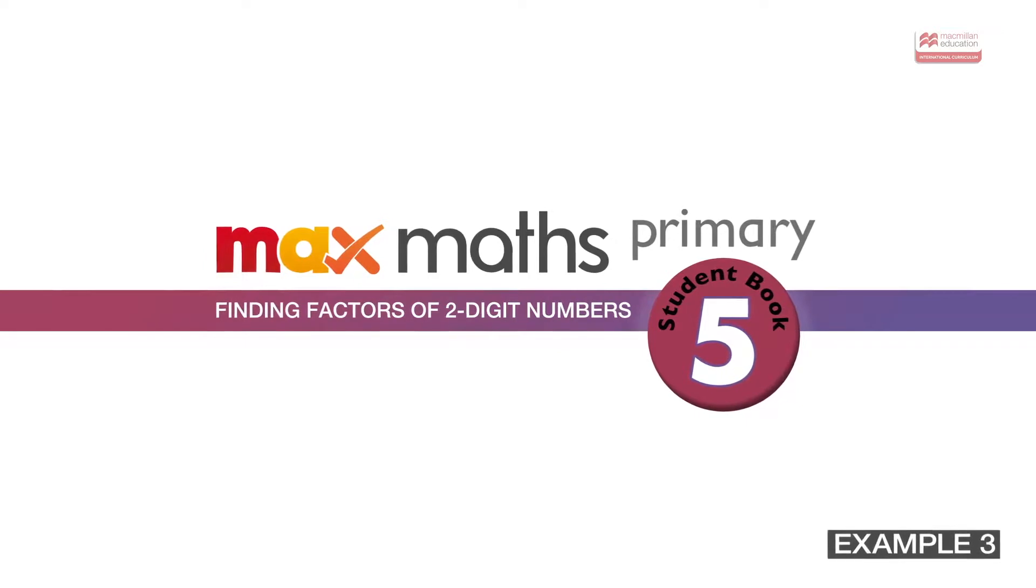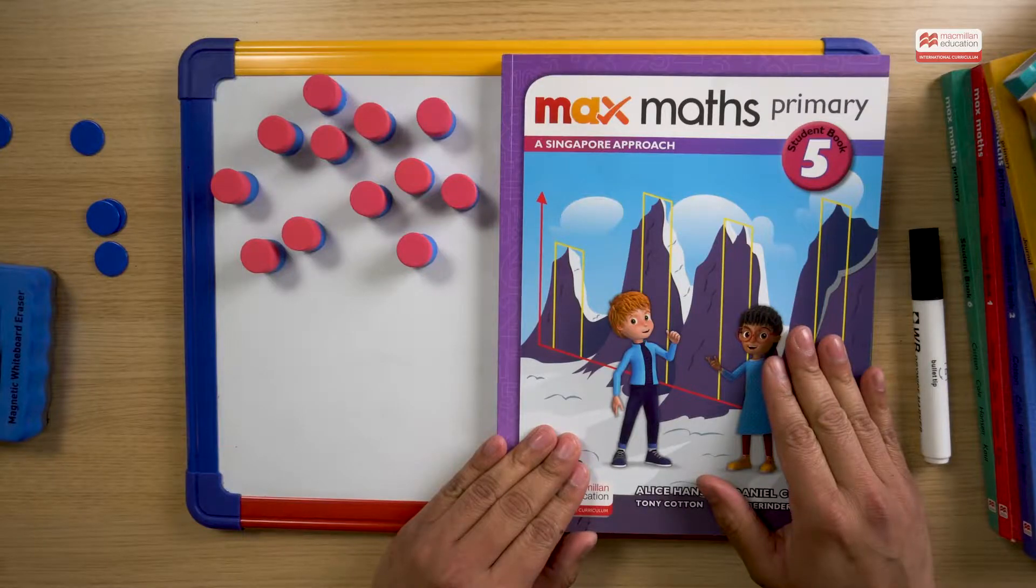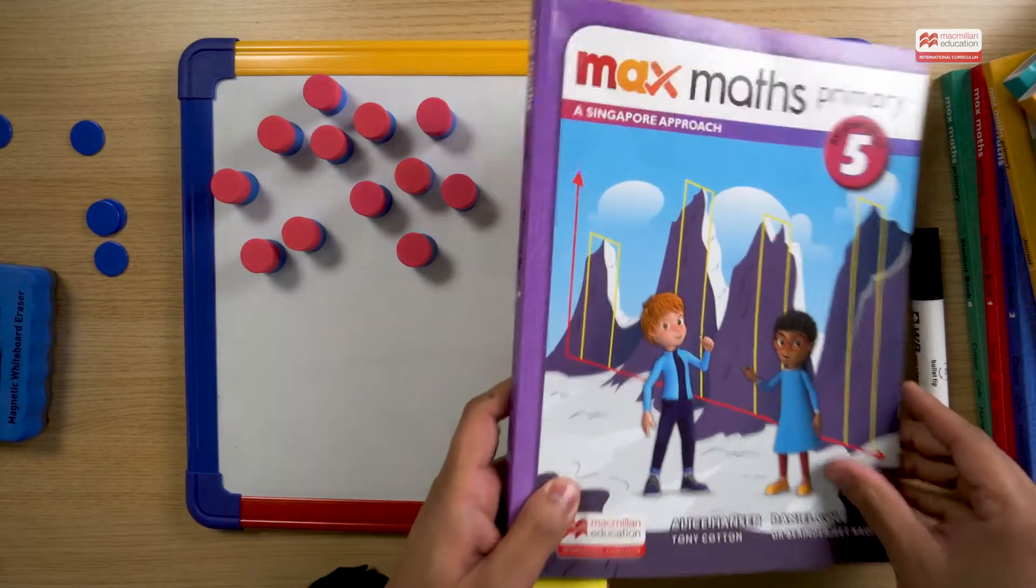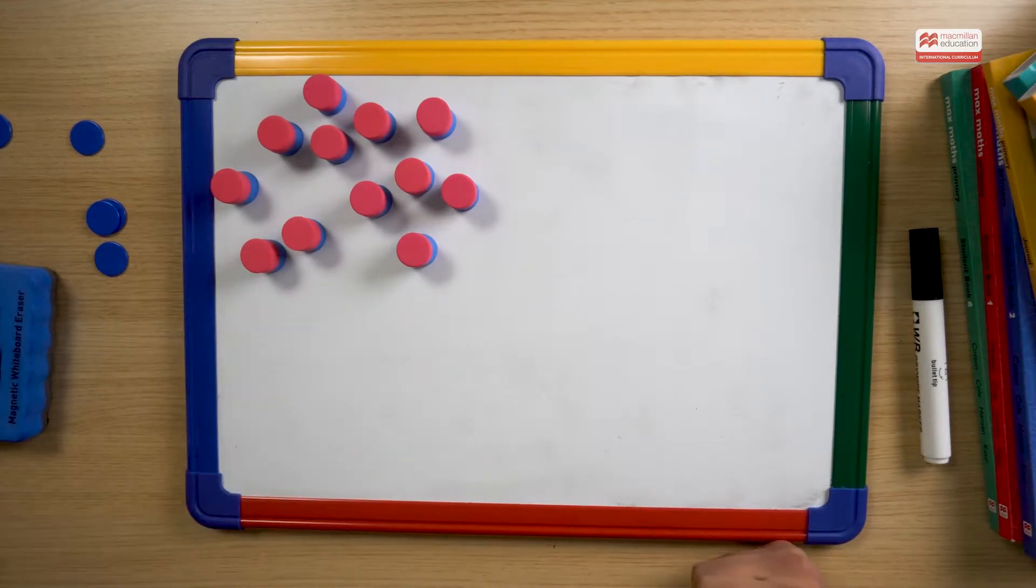Now we're going to look at a lesson from our MaxMaths Primary Student Book 5 on factors. Factors is a tricky topic because a lot of teachers will find it's very hard to visualize. How do I show my children how factors look? What are factors?